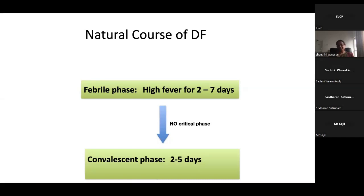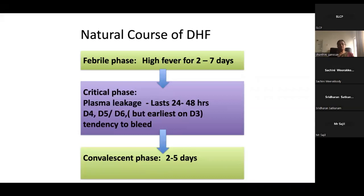Now we will look at the differences between DF and DHF. In DF, the febrile phase goes straight into the convalescent phase — the febrile phase lasts about two to seven days and the convalescent phase about two to five days, without any critical phase. But in Dengue hemorrhagic fever, there is a critical phase before entering the convalescent phase, which lasts about 24 to 48 hours. The earliest time of leaking is about day three.